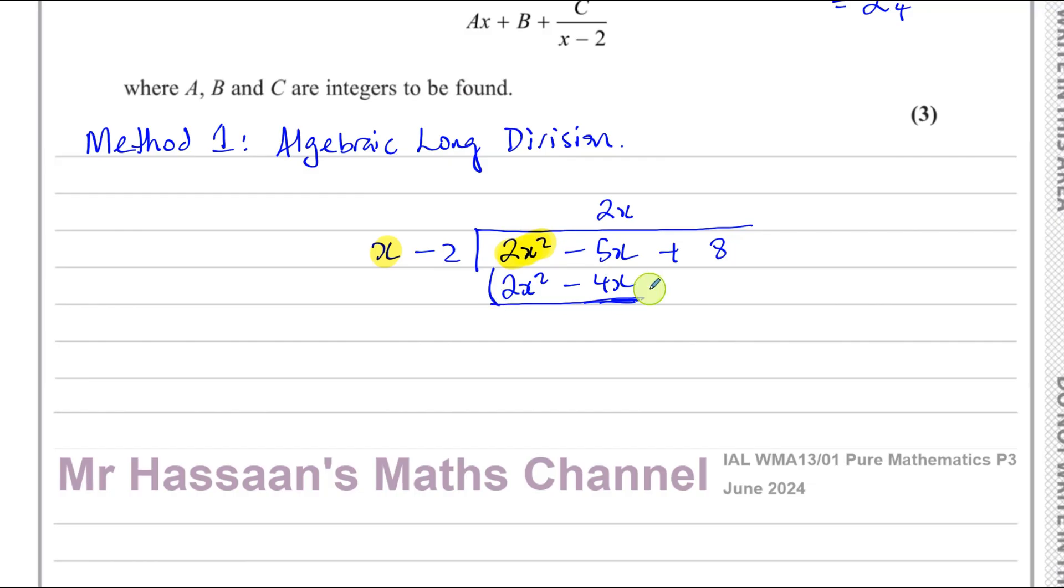Now we're going to subtract these two lines. When I subtract them, I like to put a minus sign here just to remind myself, because a lot of people will forget, especially in a question like this where there's a minus here as well. So you have minus 5x minus minus 4x, which is minus 5x plus 4x, which is negative x. And bring down the next term, which is plus 8. Always bring down the next term, just like when you did long division in primary school.